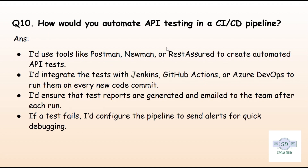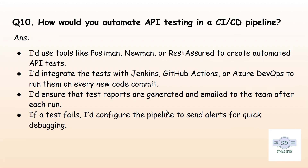The final question is: how to integrate API testing in a CI/CD pipeline? First, use Postman, Newman, or Rest Assured to automate API tests. Second, integrate with Jenkins, GitHub Actions, or Azure DevOps to run tests on every code change. Third, generate detailed test reports so the team can quickly see failures. Fourth, set up GitHub Alerts so developers can fix issues immediately.